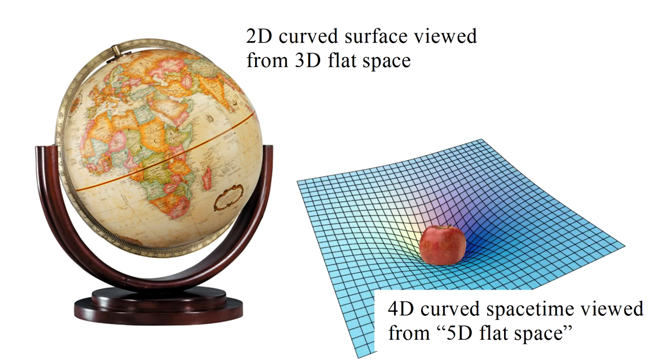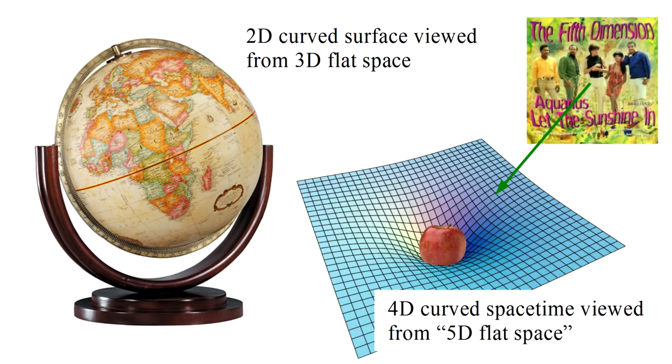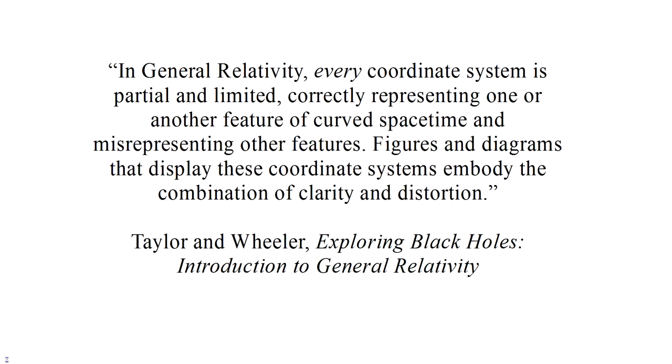But now our problem is that relativity tells us that four-dimensional space-time is curved. Presumably, if there was a fifth dimension, we could step into five-dimensional flat space and view our four-dimensional curved space-time, and it'd all make perfect sense. Unfortunately, we're stuck inside curved space-time. And because of this, we're forced to accept the reality summed up in this quote from the book, Exploring Black Holes. In general relativity, every coordinate system is partial and limited, correctly representing one or another feature of curved space-time and misrepresenting other features. Figures and diagrams that display these coordinate systems embody the combination of clarity and distortion. No illustration, graph, or animation we can ever produce to represent space-time can ever be entirely free of some form of distortion.